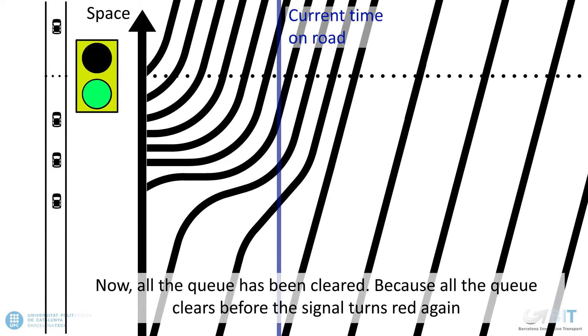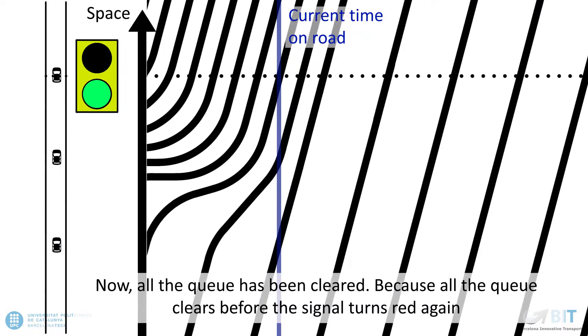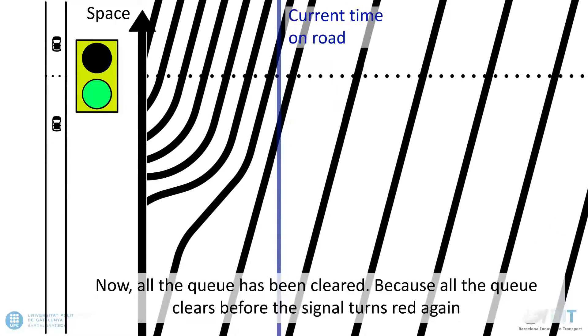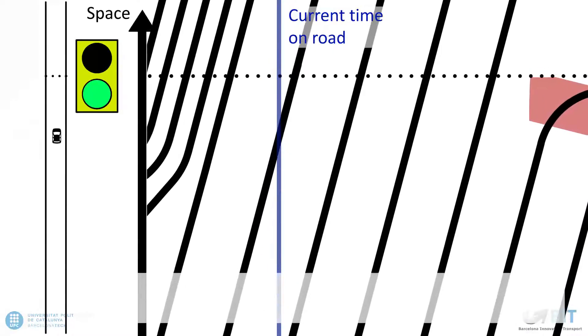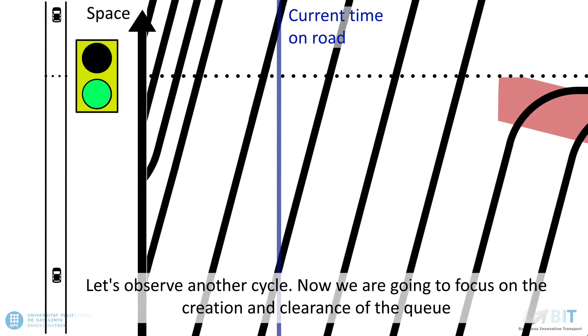Now all the queue has been cleared. Because all the queue clears before the signal turns red again, the signal is said to be under-saturated. Let's observe another cycle.